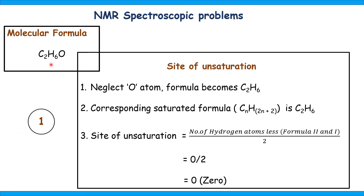Example 1: the molecular formula of the given compound is C₂H₆O. Neglect the oxygen atom; the formula becomes C₂H₆. The corresponding saturated formula for two carbon atoms is also C₂H₆. The site of unsaturation equals (6 minus 6) divided by 2, which is 0 divided by 2, equal to 0. This indicates the compound is saturated and acyclic in nature.